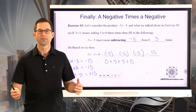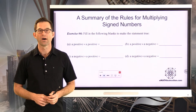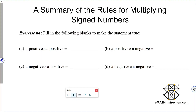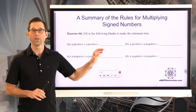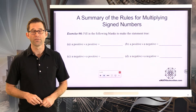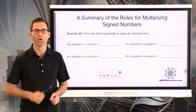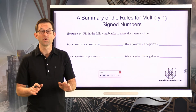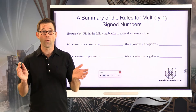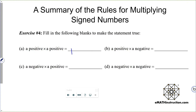Let's summarize all of this into one picture for multiplying signed numbers — exercise number 4. A positive times a positive is a positive; that's what you've been doing all along since you first learned multiplication. A positive times a negative is negative, as we saw in exercise 1. A negative times a positive is also negative, as we saw in exercise 2. And a negative times a negative turns into a positive, as in our final exercise.